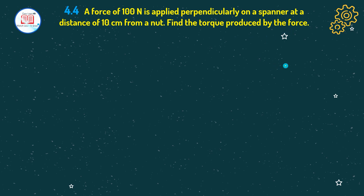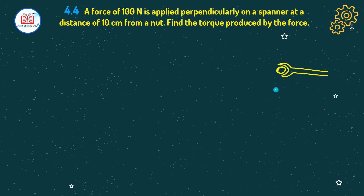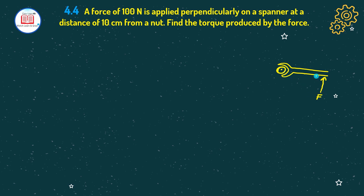Let me draw it here. This is a nut. The force of 100 newton is acting perpendicularly on the spanner. This is the force, and from the nut the distance — that is equal to 10 cm. We will find the torque value which is produced by this force.